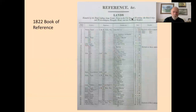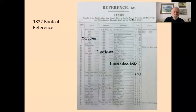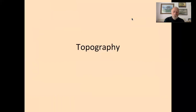The 1822 book of reference shows the occupiers, the proprietors, a name, a description, and the area of the land — given in acres, rods, and perches, which is not the easiest set of units. There is a very great deal of information available about the nature of the parish in 1822, and in 1840, although the 1840 book of reference is less detailed and mainly concentrates on the proprietors rather than the occupiers.